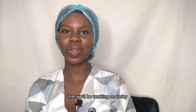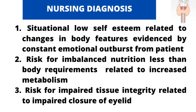Now let's get into the nursing diagnoses we'll be working on today. The first is situational low self-esteem, related to changes in body features, evidenced by constant emotional outbursts from the patient. The body feature changes — like the enlarged neck and bulging eyes I showed in the last slide — are what inform this particular nursing diagnosis.